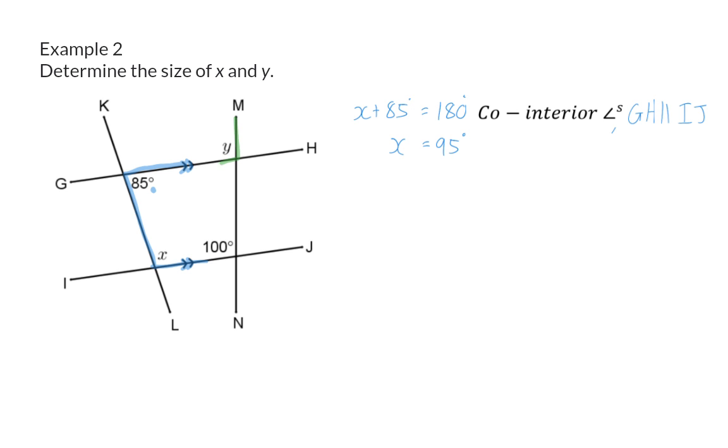Next we need to determine the size of y, and here you can see that you can very easily make the mistake of saying that y forms part of alternate angles, so y is 85 degrees. But even though these two are alternate angles, line KL and MN are not parallel, and that is why you need to focus on angle y but also on the other parallel line. Then you will see that we can form an upside down F for corresponding angles. Therefore I can say that angle y is 100 degrees for the reason corresponding angles and again my parallel lines.